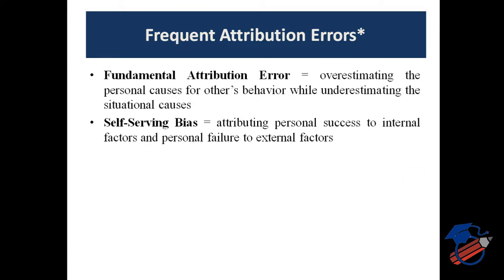Errors that can be made are called fundamental attribution error. Fundamental attribution error means overestimating the personal cause for others' behavior while underestimating the situational cause. When someone is performing something, we tend to measure the behavior of the other person through their internal characteristics — if someone has done something bad, we associate it more with their internal characteristics. That is called fundamental attribution error.